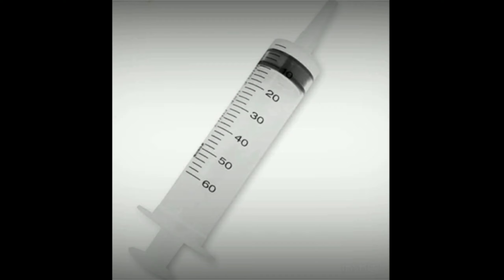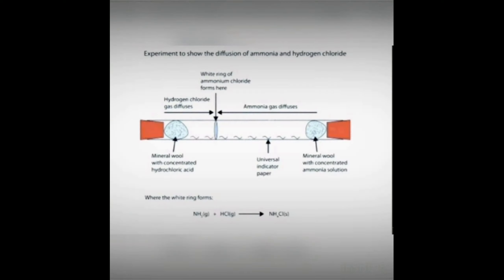Gases neither show the property of fluidity nor rigidity. For the diffusion activity in gases, take a one-meter long narrow glass tube, soak one piece of cotton in hydrochloric acid and another in ammonia solution. Insert both pieces of cotton at the two ends of the tube using tongs, and close the ends with rubber corks. We observe that hydrochloric acid gives off hydrogen chloride gas and ammonia solution gives off ammonia gas — both react to form white fumes of ammonium chloride, visible as a white ring in the tube.